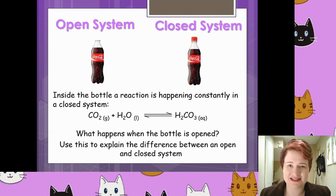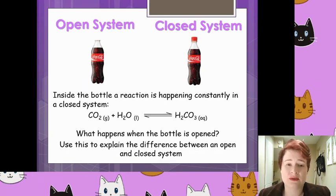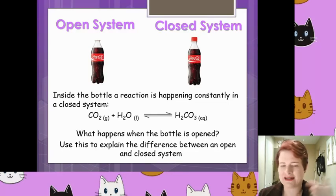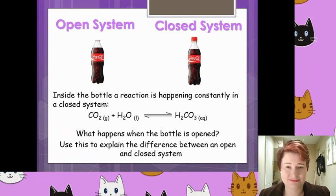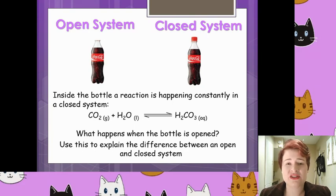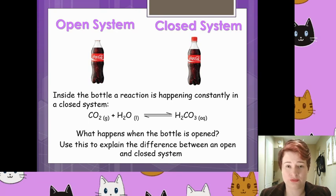On the left hand side of your screen there is an open bottle. With this open bottle, obviously the gases can escape. So in an open system, chemicals — specifically gases — can escape very easily. In a closed system, the reaction is happening where no reactants or products can escape at all.